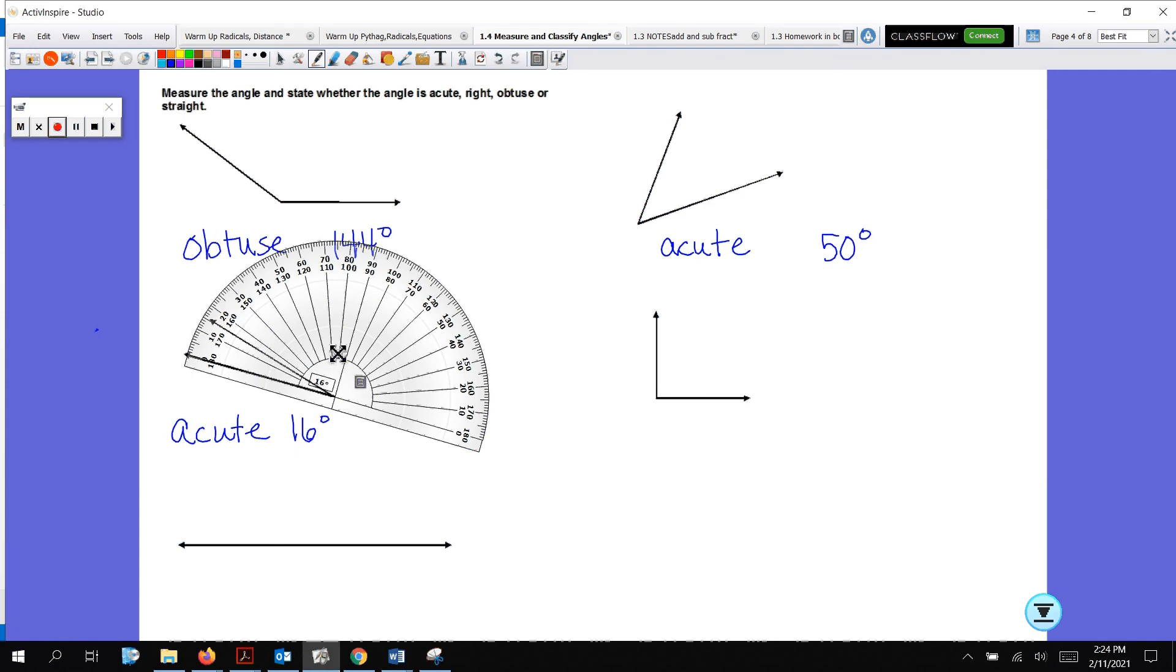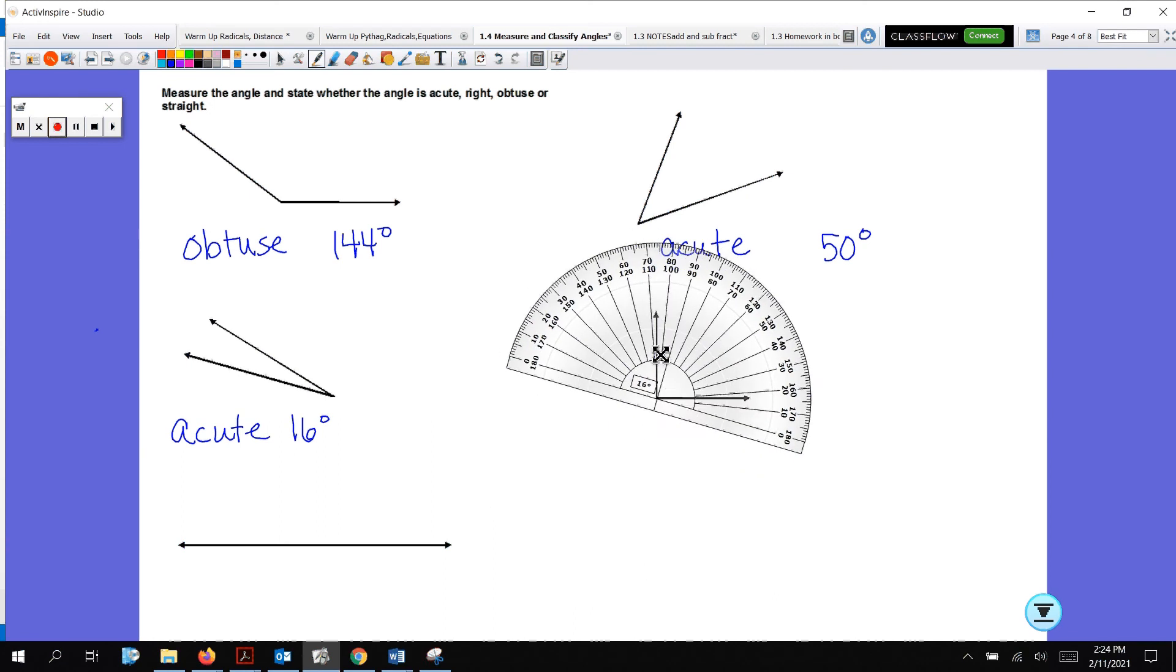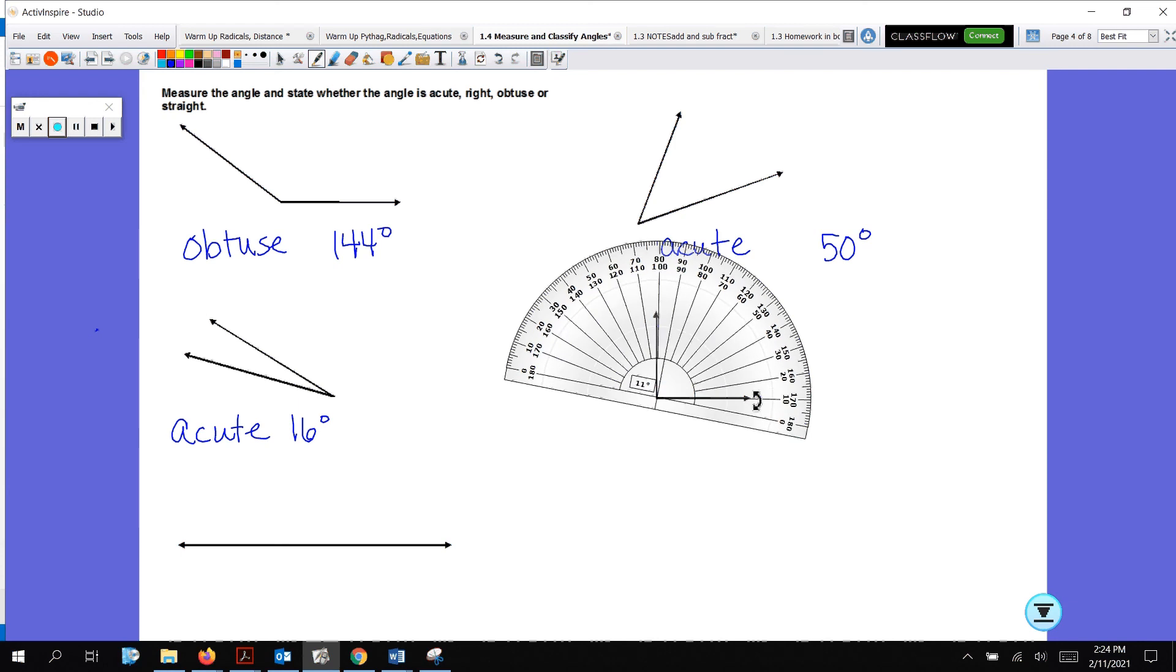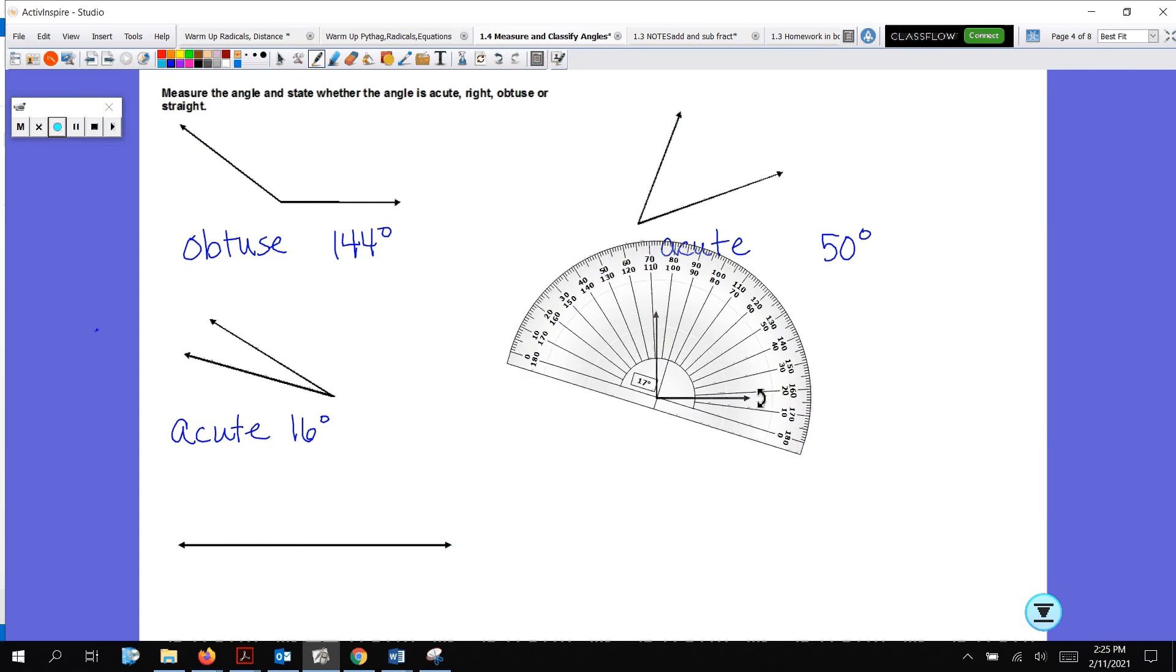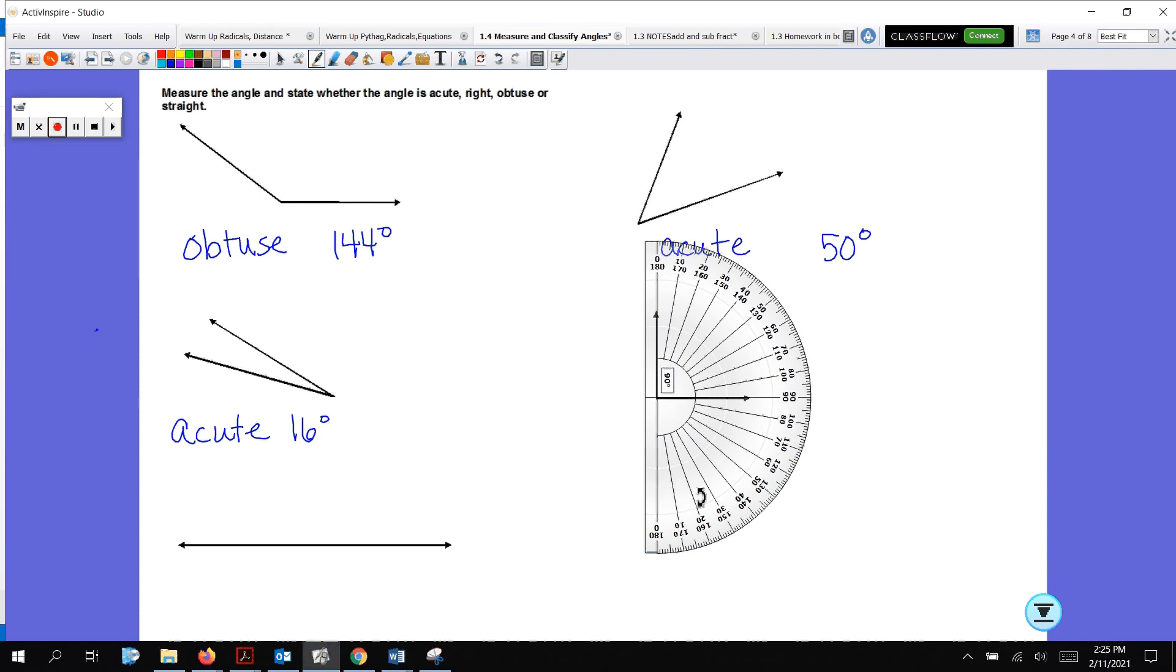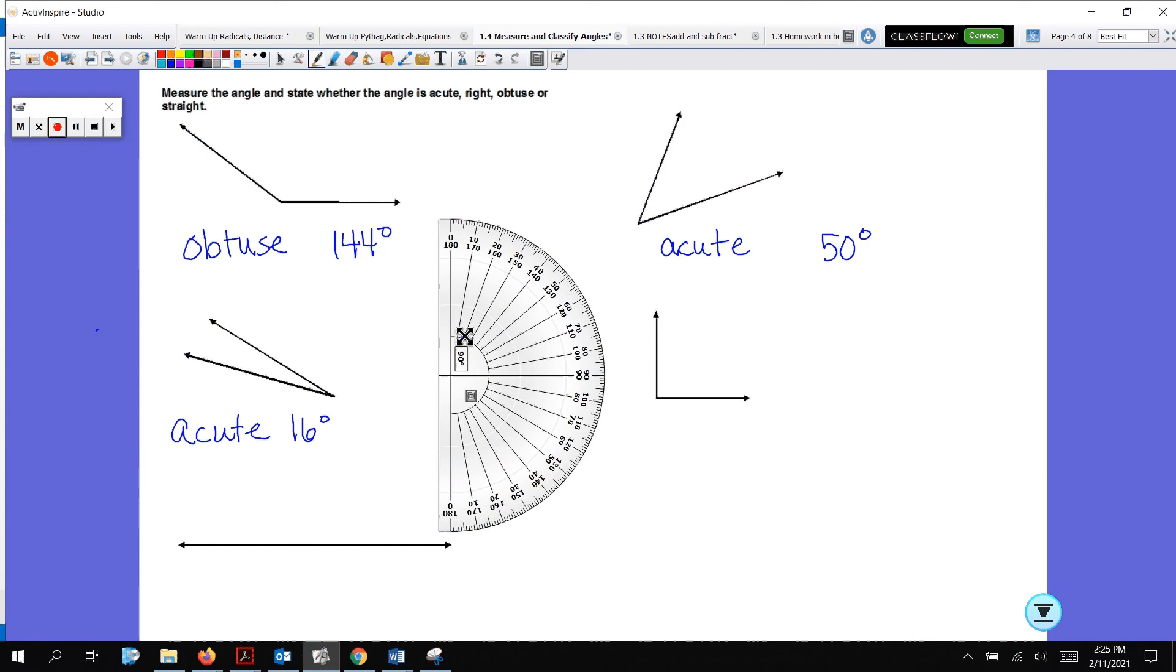And we got this bad boy over here. I'm not sure. It looks like it could be right, but let's make sure. Let's line up that initial point with the crosshairs at the bottom of our protractor. And let's rotate so we're on zero. I'm lining up that right with the zero, and I'm getting a measure of 90 degrees. So this is a right angle. I'm going to put that little box in here because it measures exactly 90 degrees.